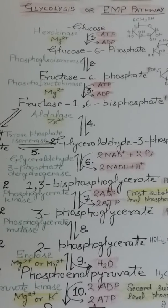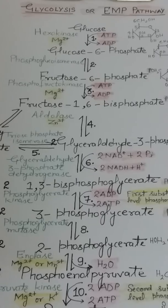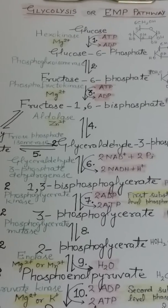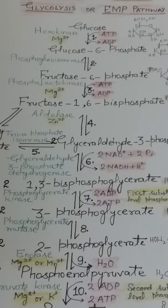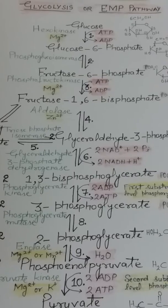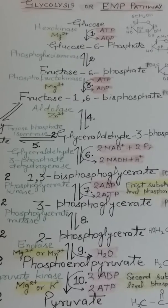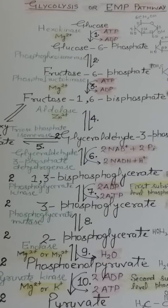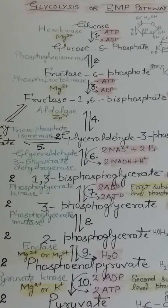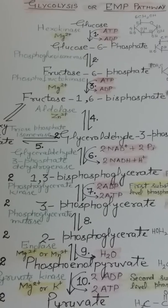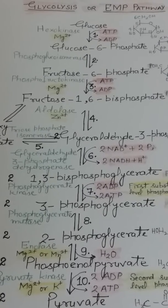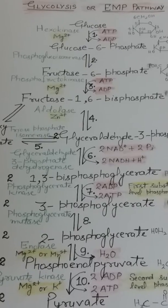Hello everyone, welcome to our channel Bio Skill Circle. Today we are going to discuss glycolysis in detail. This is one of the very important and interesting topics in aerobic respiration. Enzyme-catalyzed reactions can be grouped into three major processes: first is glycolysis, second is citric acid cycle, and third is oxidative phosphorylation.